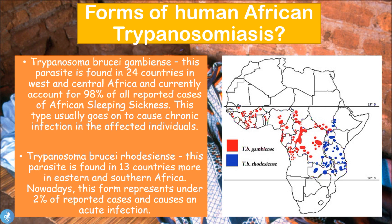Trypanosoma brucei gambiensi is found in 24 countries in West and Central Africa and currently accounts for 98% of all reported cases of African sleeping sickness. This is the more prevalent type, found in most parts of West and Central Africa, and usually causes a chronic infection in affected individuals.